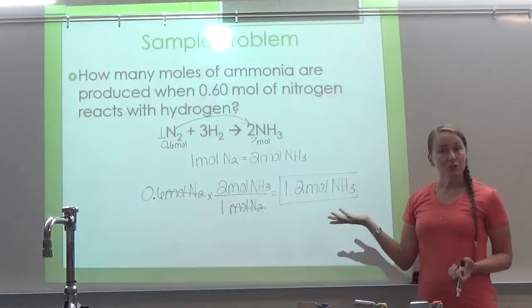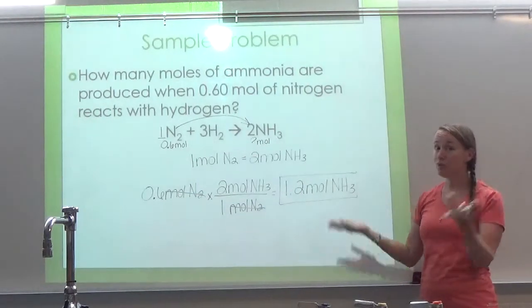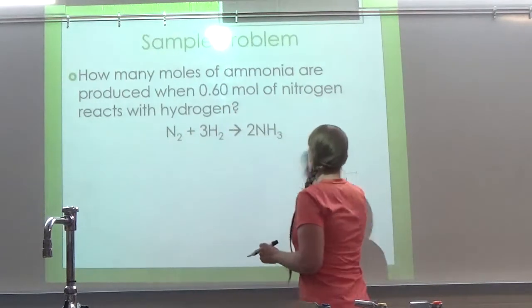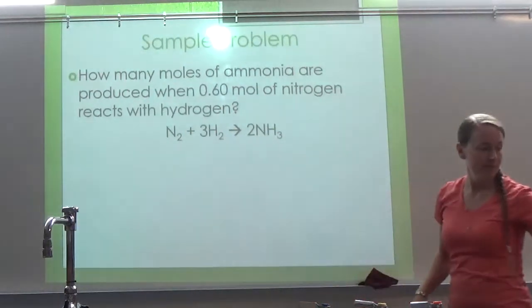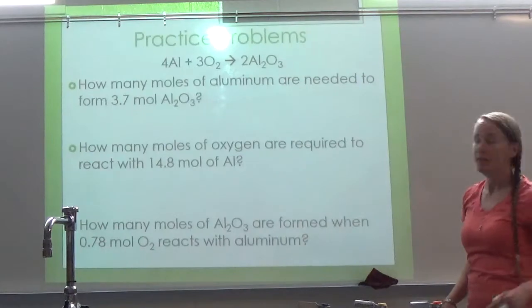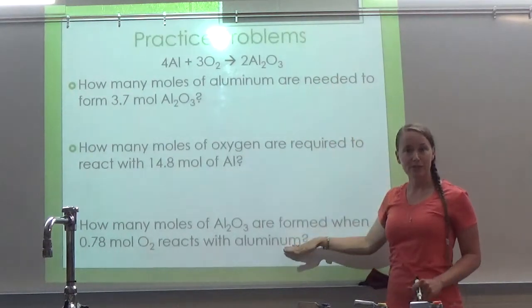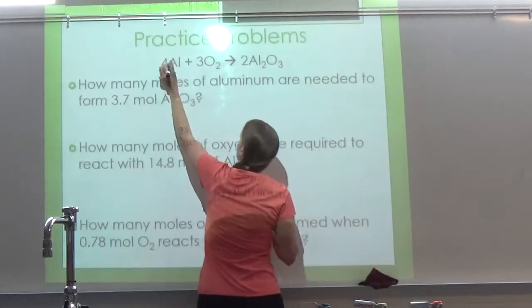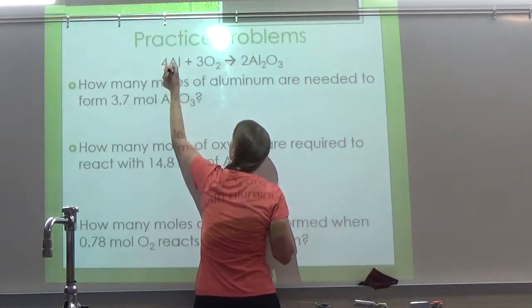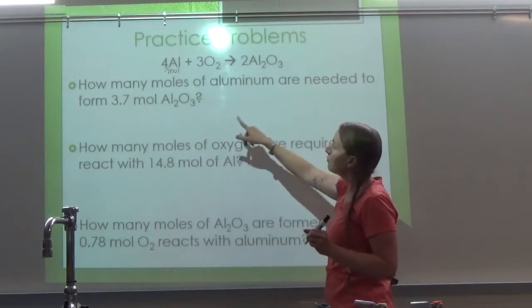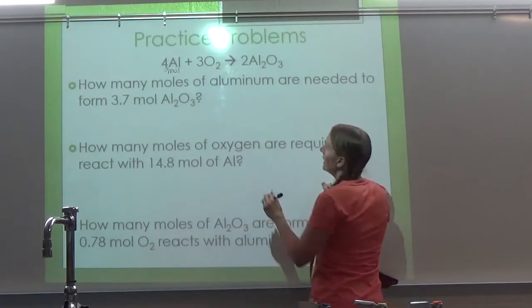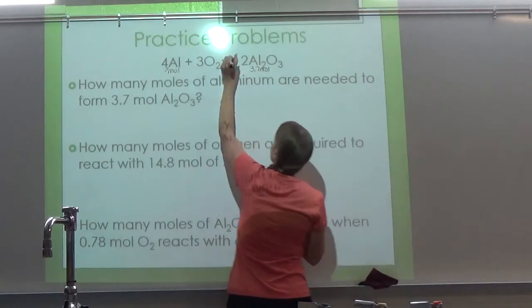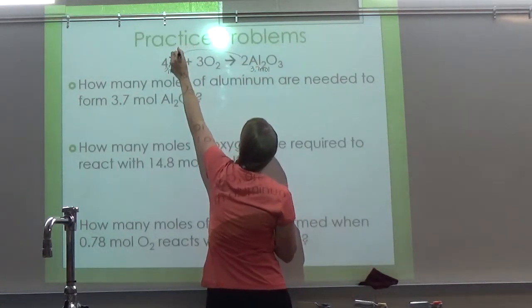That's how you do a mole ratio. We're going to look at a few more because it's really important for stoichiometry. We're going to use the same reaction for all three of these questions. The problem says: how many moles of aluminum are needed to form 3.7 moles of Al₂O₃? So under aluminum I'm going to put a question mark in moles, and under Al₂O₃ I'm going to write 3.7 moles. We're going from Al₂O₃ to aluminum.